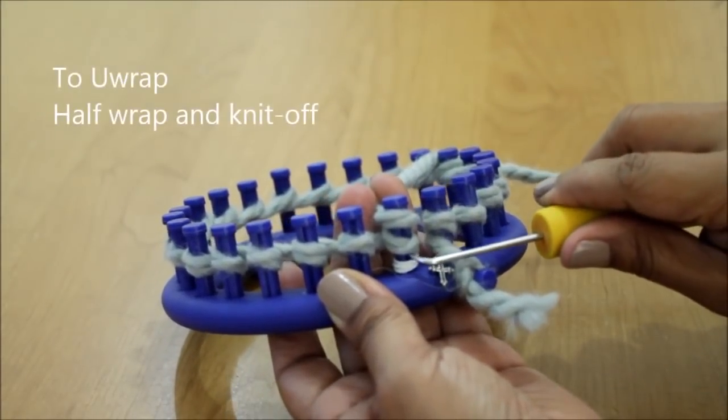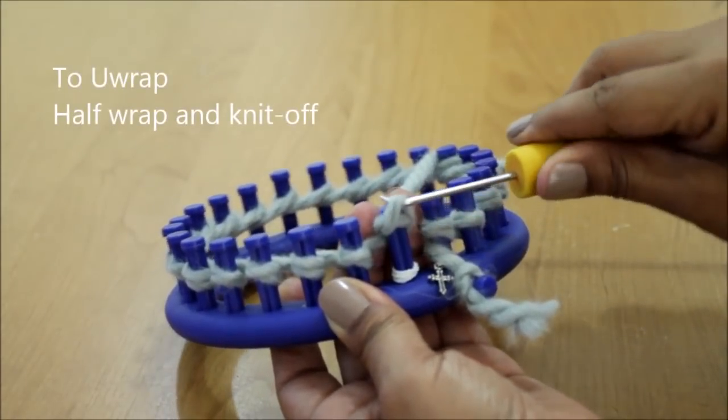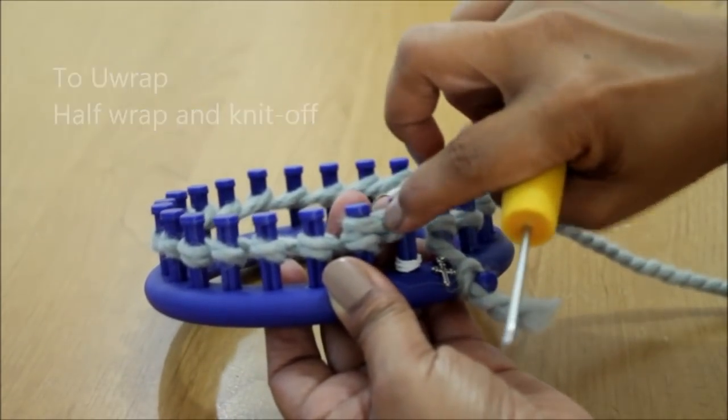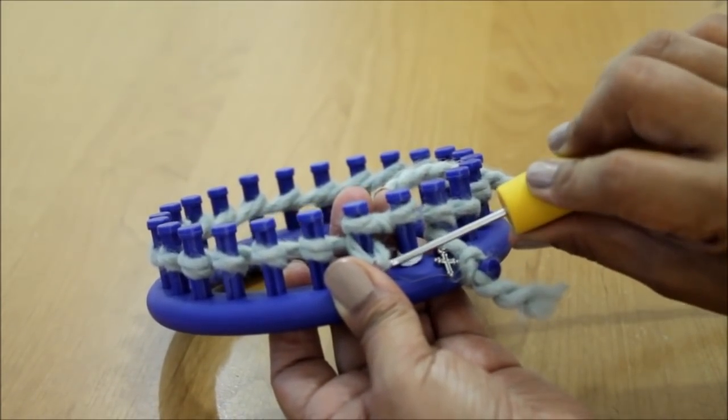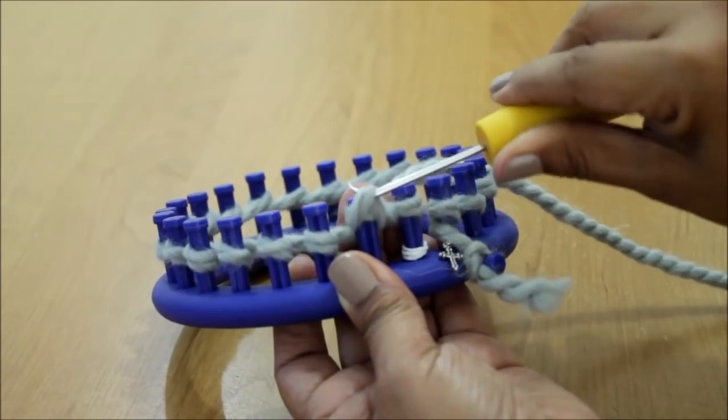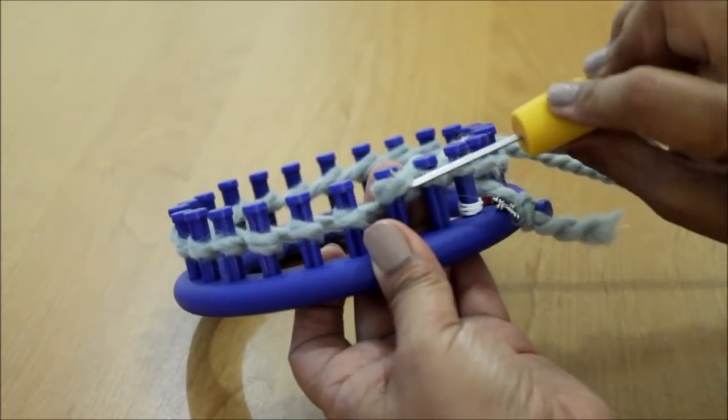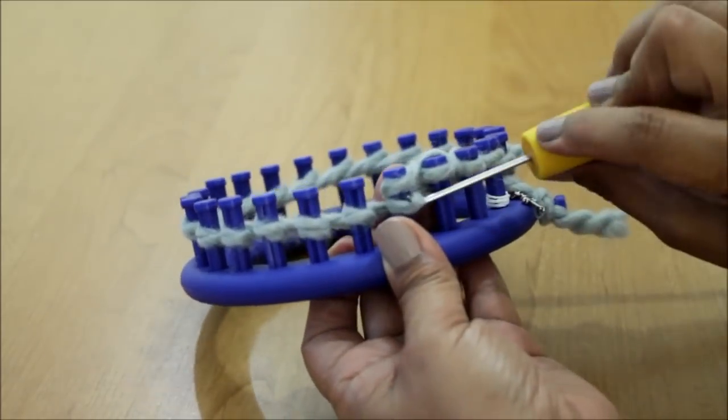We're going to be using the U-wrap version of the knit stitch so you half wrap and knit off. Go to the next peg, half wrap and this one tighten a little, you see how that loose loop kind of tightens up. And then just keep knitting until you get back to your first peg.